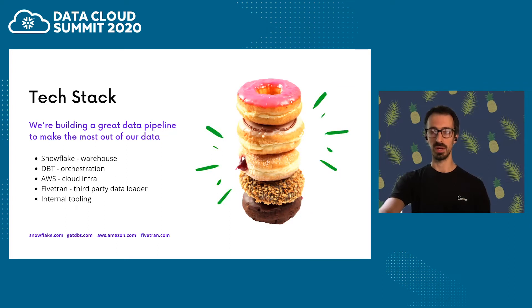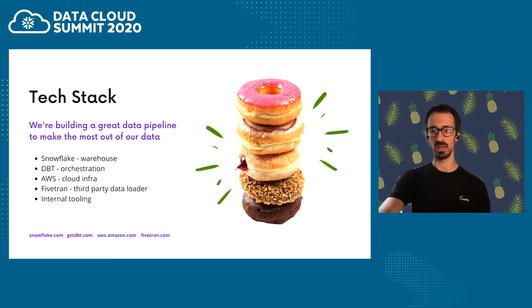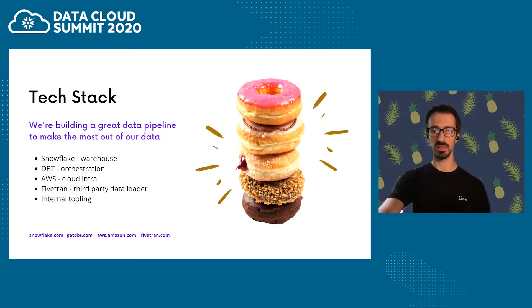DBT is how we orchestrate our SQL jobs. It's an awesome open source project that solves the orchestration for you and does so much more — if you haven't heard about it, I encourage you to check them out. AWS is the cloud infrastructure that Canva is built upon. In the warehouse team, we use services such as IAM, S3, EC2, EKS, etc. Fivetran is how we handle third-party loads, mainly for marketing purposes. Originally, we were developing our own APIs to ingest these sources — needless to say, it was simply non-scalable.